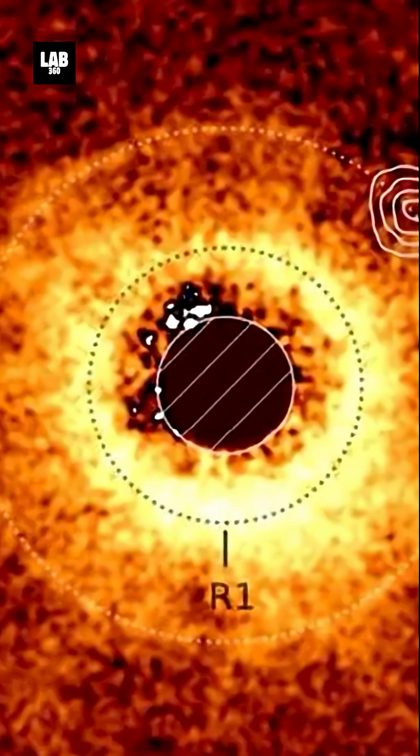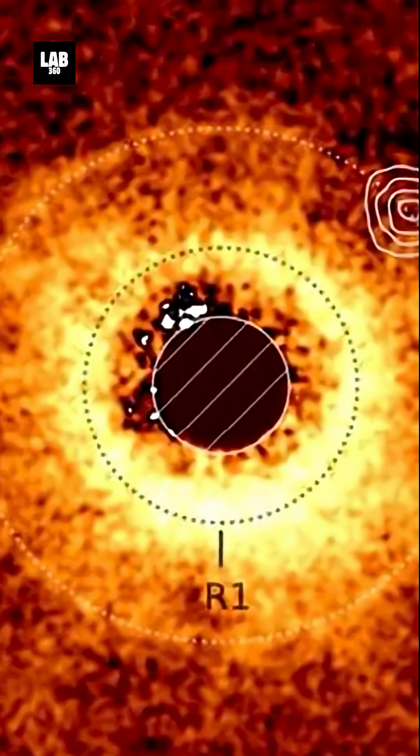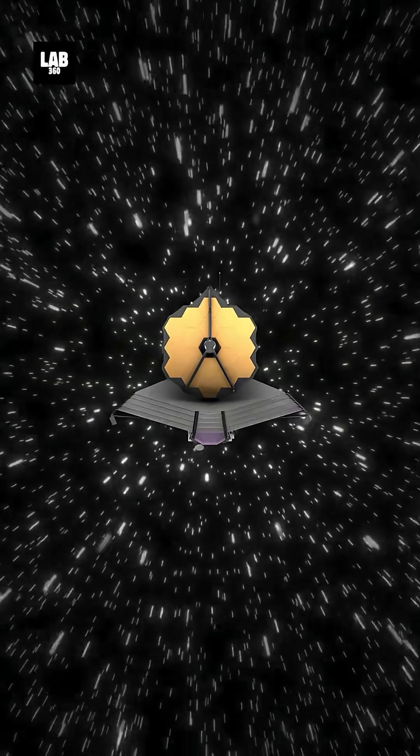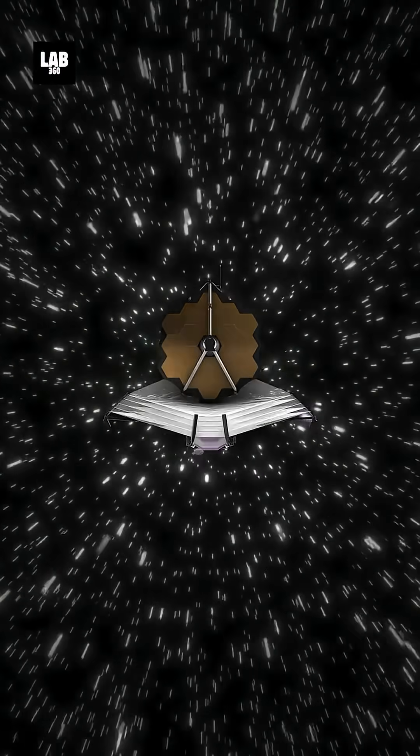So while TWA-7b is both the lowest mass planet ever imaged and the first exoplanet discovered by the JWST, it's likely just the beginning.